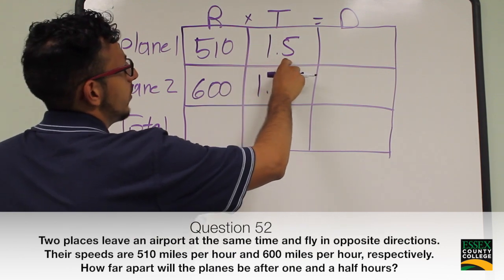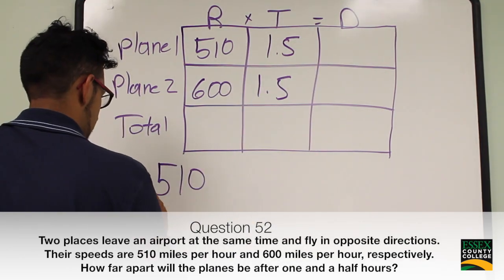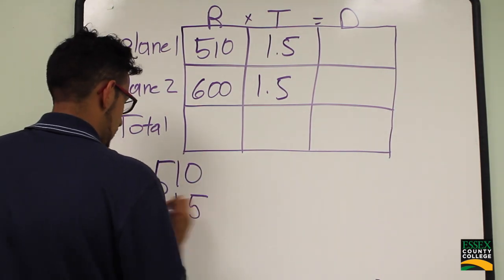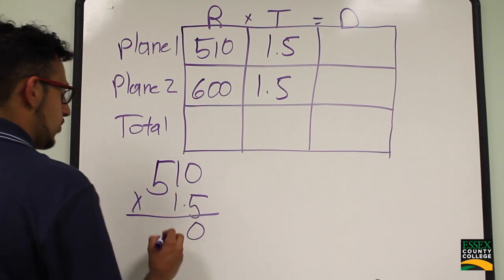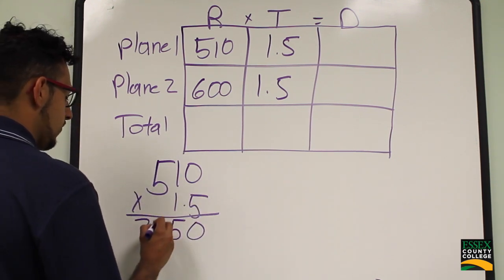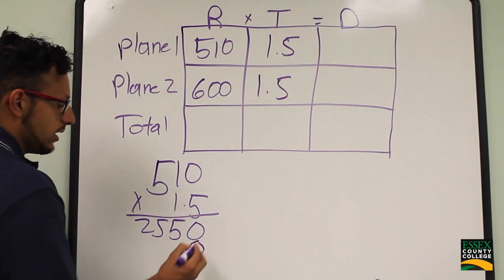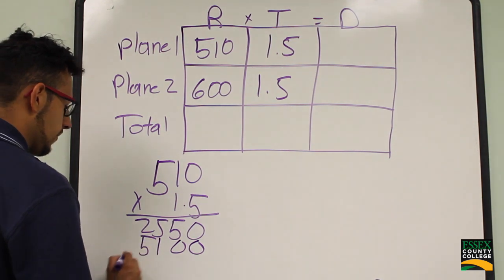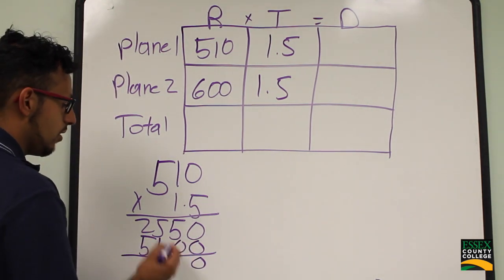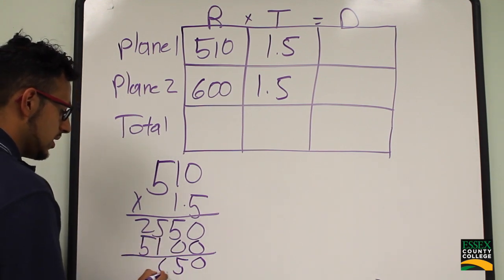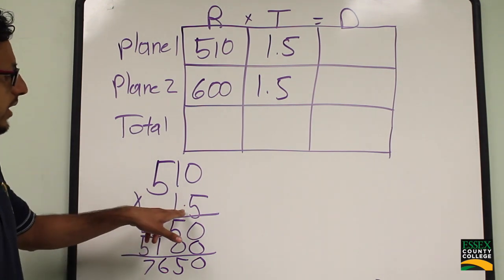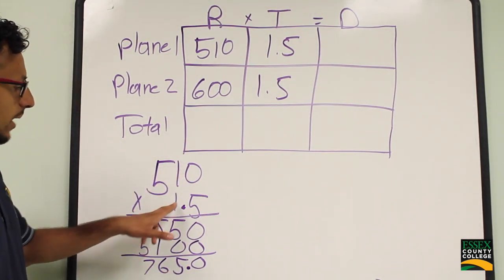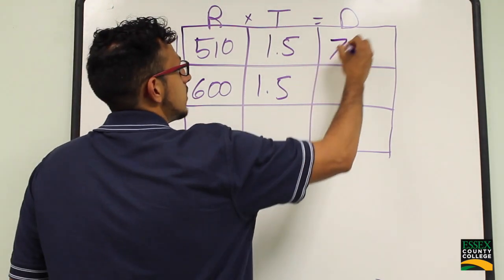Let's multiply 510 times 1.5 to get the distance for plane 1. 5 times 0 is 0, 5 times 1 is 5, 5 times 5 is 25. On the next line, starting with 0: 1 times 0 is 0, 1 times 1 is 1, 1 times 5 is 5. Adding up: 0, 5, 6, 7. Since we have 1 decimal point, we move over 1 decimal spot. So 510 times 1.5 is 765.